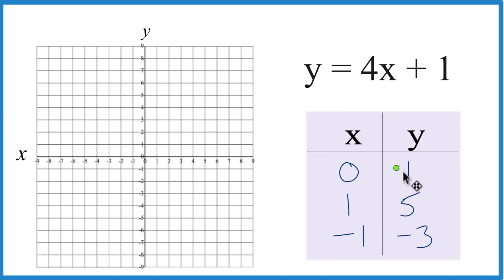So we have x is 0, y is 1. x is 0, y is 1. x is 1, y is 5. So x is 1, y is 5. And we could graph with just two points, but it's nice to have more points, just in case you made a mistake up here.